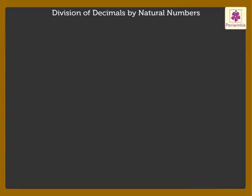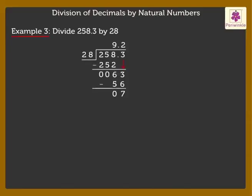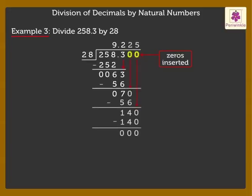Let's solve a tricky one now. Here, as the remainder obtained is not 0, we simplify further by inserting extra 0s in the dividend to complete the division. Thus, we get the quotient as 9.225 and remainder as 0.